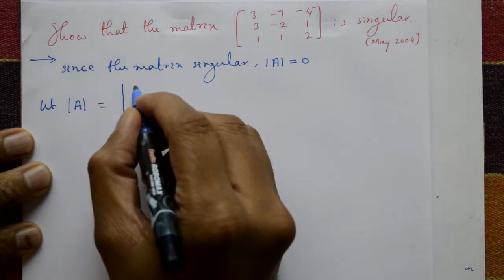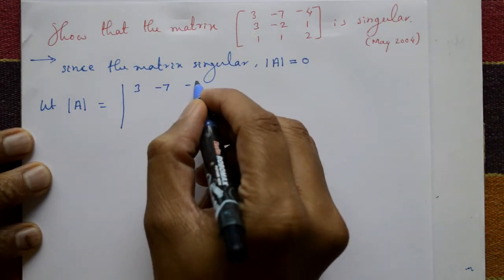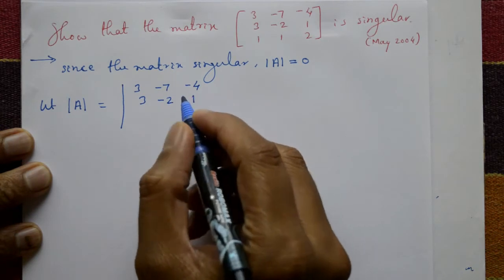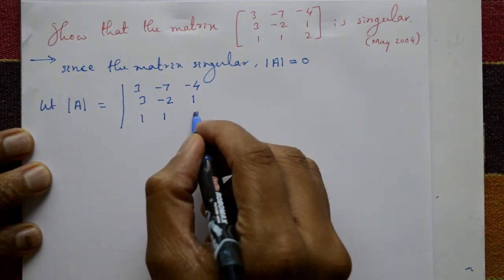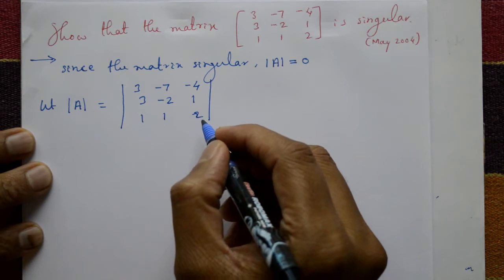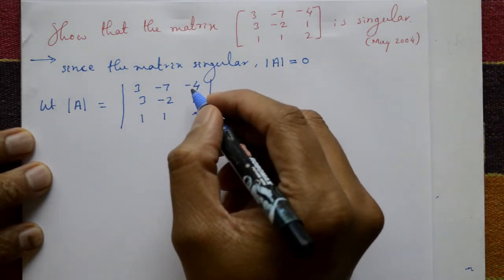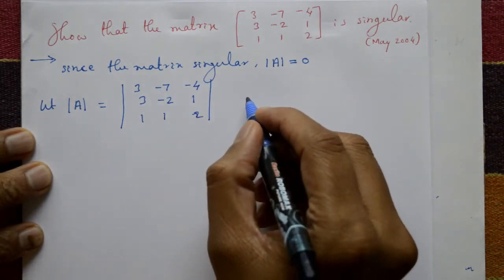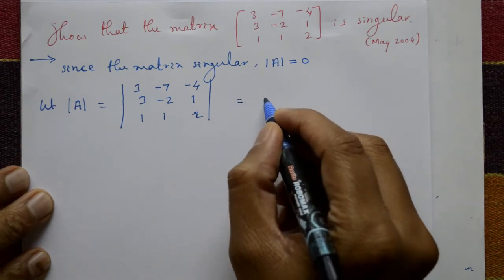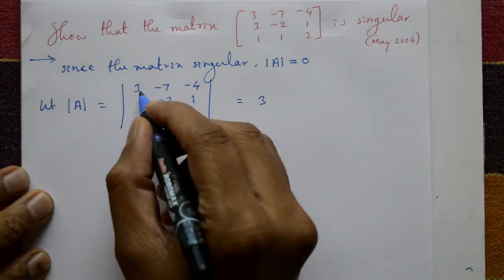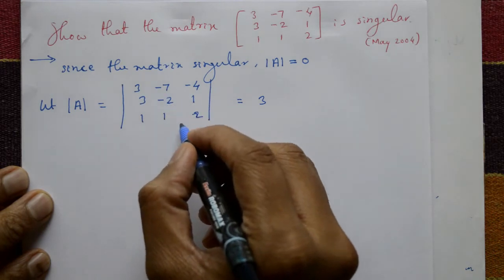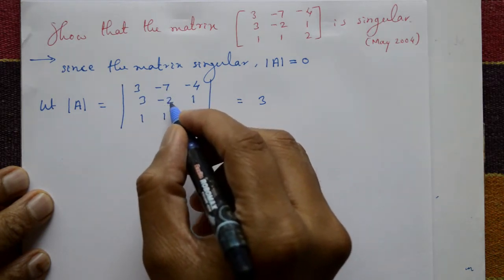The matrix A has elements: first row 3, -7, -4; second row 3, -2, 1; third row 1, 1, 2. Now expand this determinant along the first row, considering the first row first column minor with elements -2, 1, 1, 2.